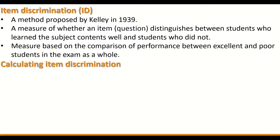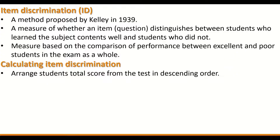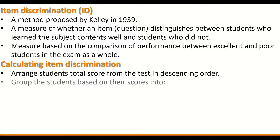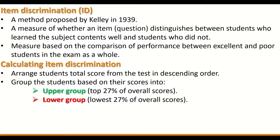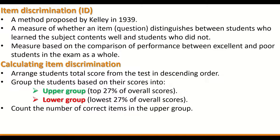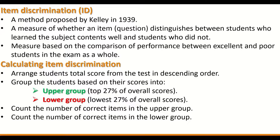Item discrimination is calculated by arranging the student total scores from the test in descending order. Group the students based on their scores into an upper group and a lower group. The upper group contains the top 27% of overall scores and the lower group includes the lowest 27% of overall scores. Then count the number of correct items in the upper group and the number of correct items in the lower group.